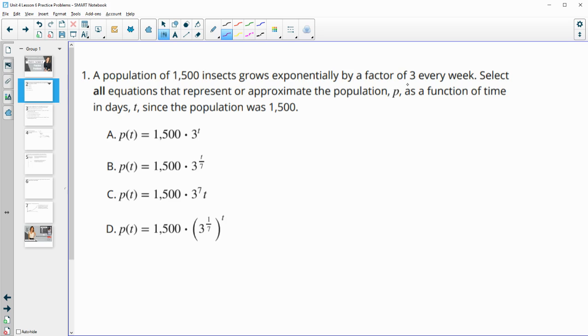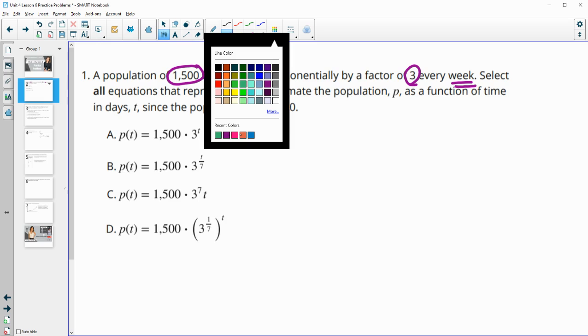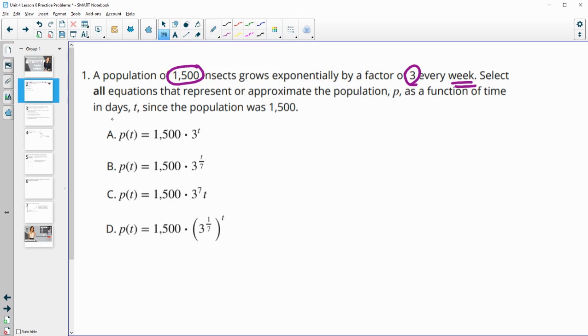So we see that it increases by a factor of three and that's every week and we start with 1,500. Then they want us to come up with the equations in days. So remember that one week equals seven days.